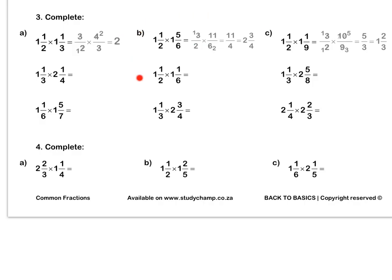Press pause to complete question B. Question C: again, we rewrite both mixed numbers as improper fractions. We simplify our 3 and our 9 by dividing by 3. We simplify our 10 and our 2 by dividing by 2. We multiply out to get an improper fraction, which is 1 and two thirds as a final answer. Press pause to complete question C.